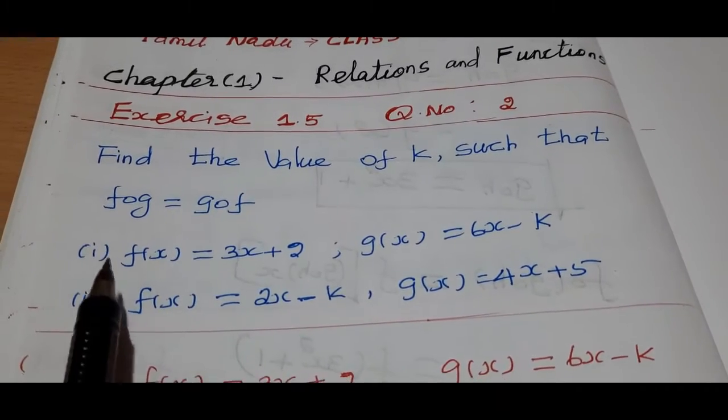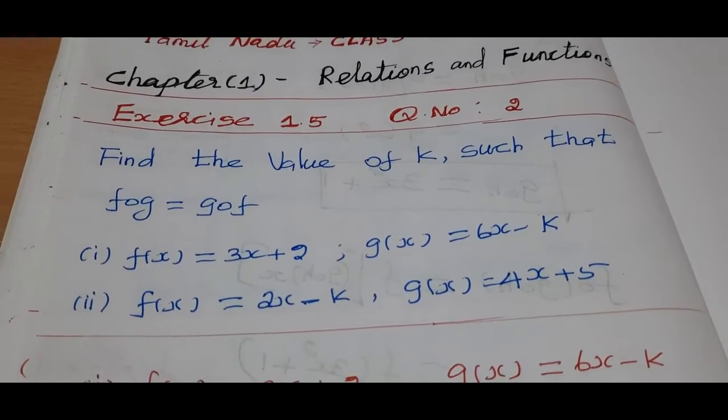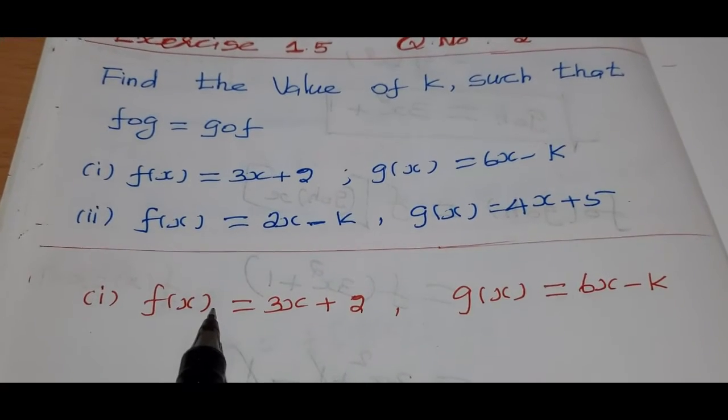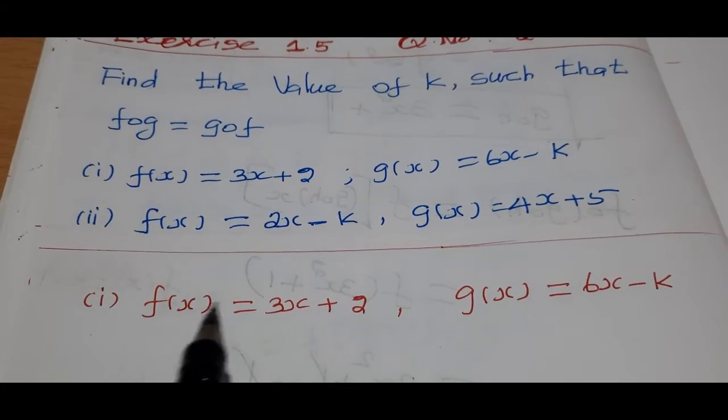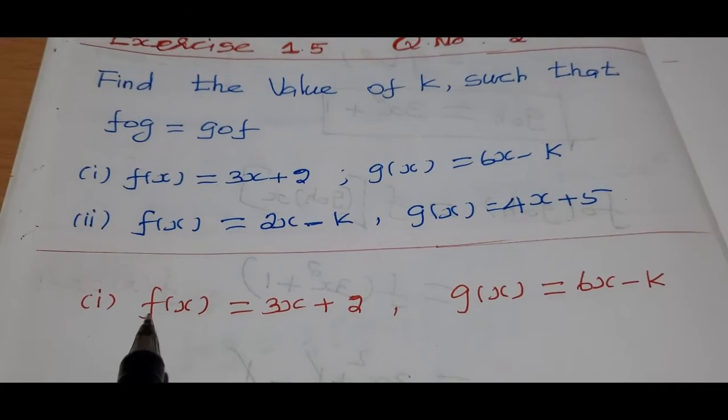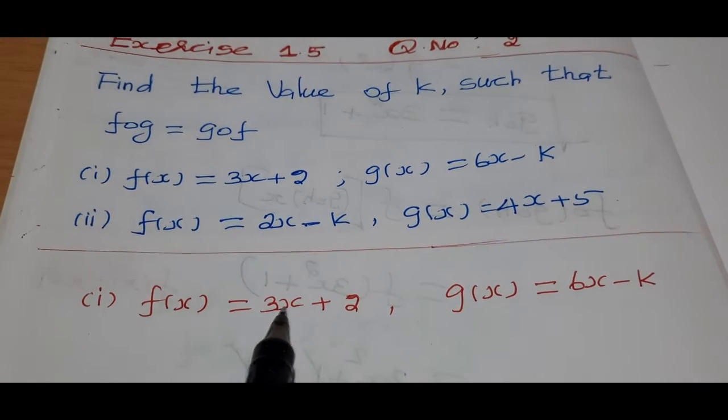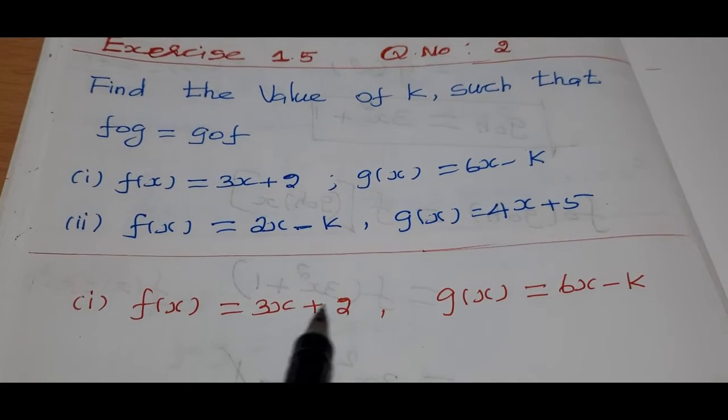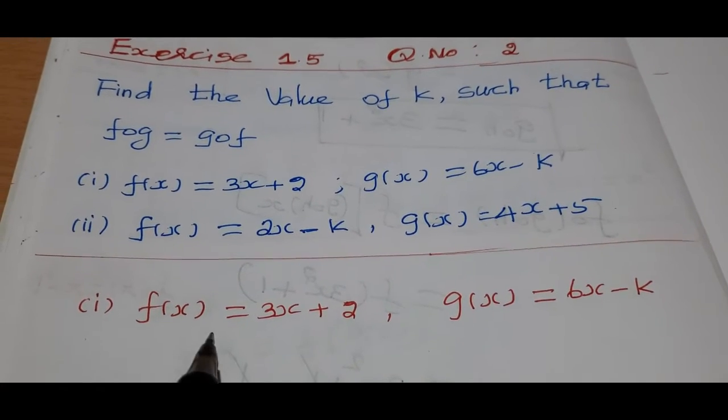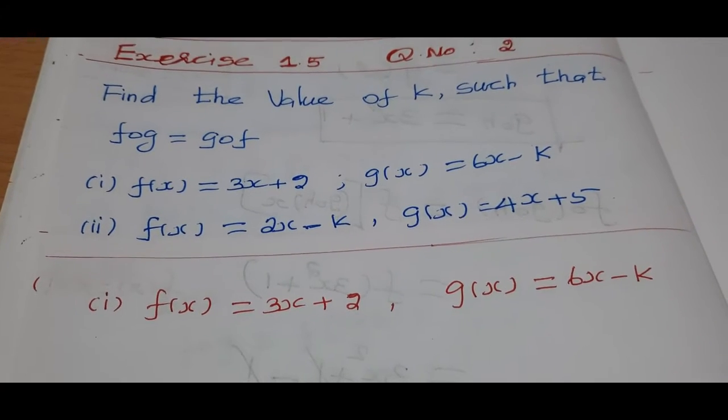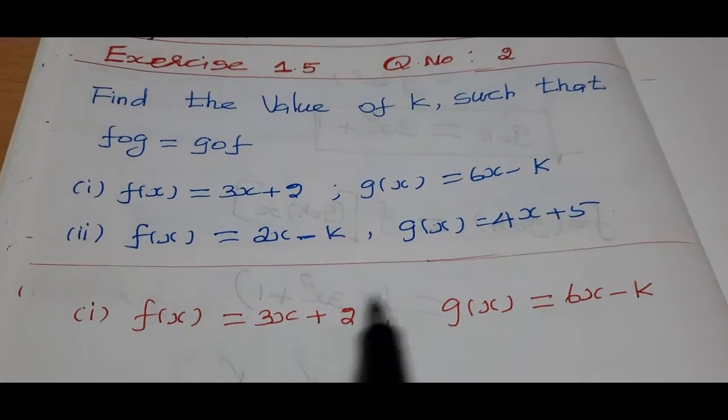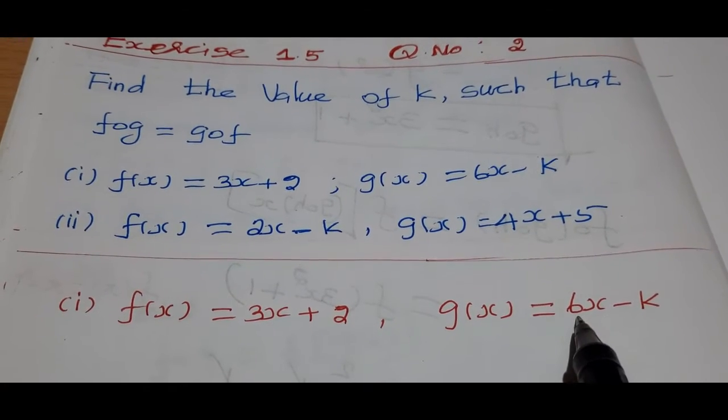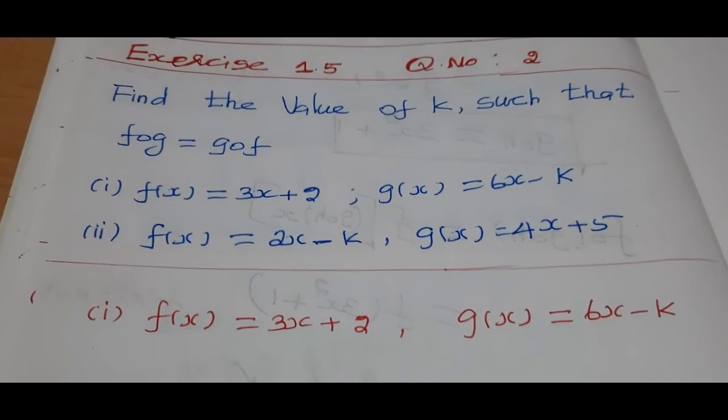Subdivision 1, subdivision 2. For subdivision 1, how do we do this? We have f of x equals 3x plus 2 and g of x equals 6x minus k.